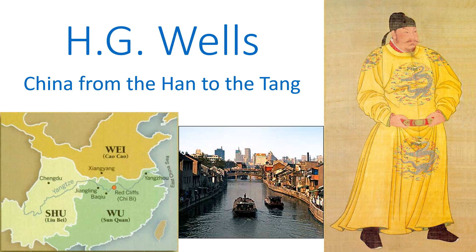Hello everyone, this is Thersaites the historian, and today we're going to resume our reading of H.G. Wells' The Outline of History. We're looking at chapter 29, sections 7 through 10, where Wells explores Chinese history from the time of the Han Dynasty through the time of the Tang Dynasty.